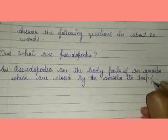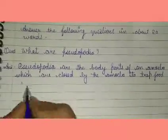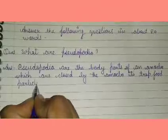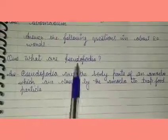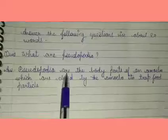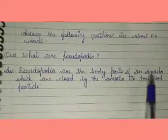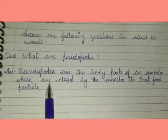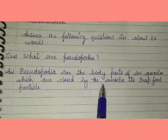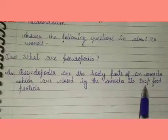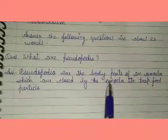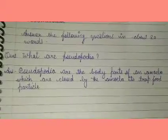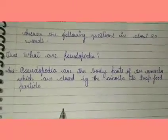Trap food particles. The question asked was: What are pseudopodia? So we have written: Pseudopodia are the body parts of an amoeba, which are closed by the amoeba to trap food particles. Pseudopodia are a body part of amoeba which are formed by the amoeba when a food particle comes into range, it gets trapped and then closed. This is what pseudopodia are.